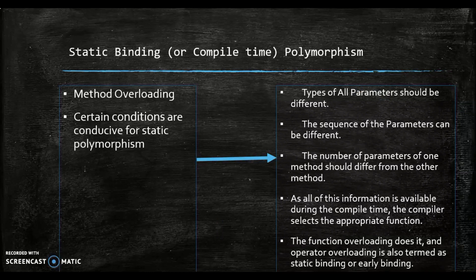With method overloading, static polymorphism is achieved in object-oriented programming languages that allow the programmer to implement various methods. The name they use can be the same, but their parameters are different. Conditions for static polymorphism: types of all parameters should be different; the sequence of the parameters can be different; the number of parameters of one method should differ from the other. The matching type and number of arguments invoke the overloaded function. As all this information is available during compile time, the compiler selects the appropriate function. Function overloading and operator overloading are also termed static binding or early binding.